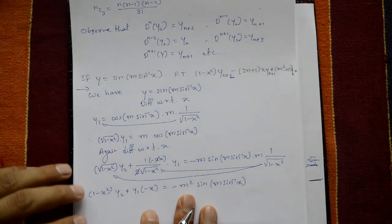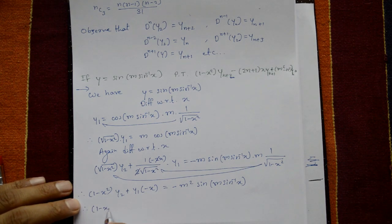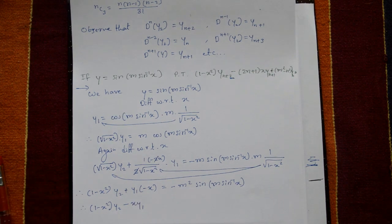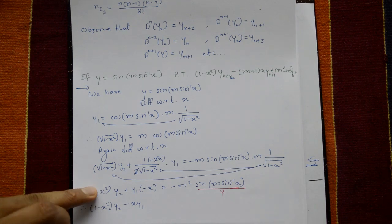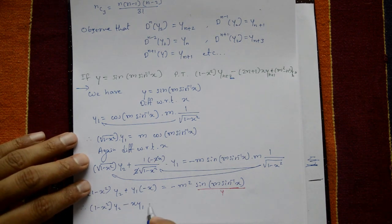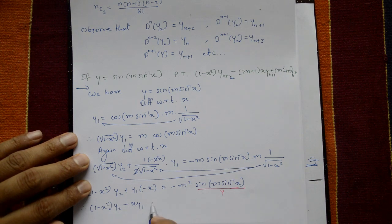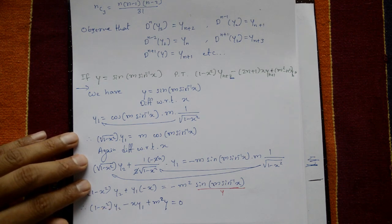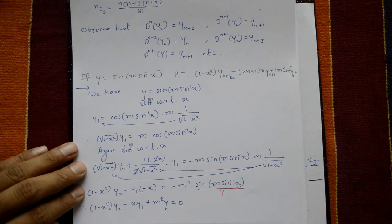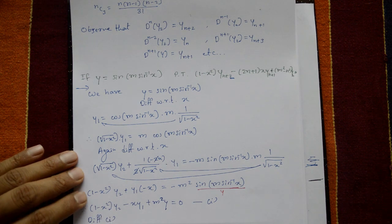Therefore: (1 - x²)·y2 minus x·y1 equals -m²·y, since sin(m·sin⁻¹x) is the original y. Rearranging: (1 - x²)·y2 minus x·y1 plus m²·y equals 0. This is equation number 1. Now differentiate equation 1 with respect to x, n times, applying Leibniz theorem.